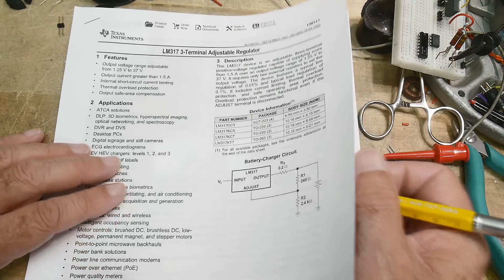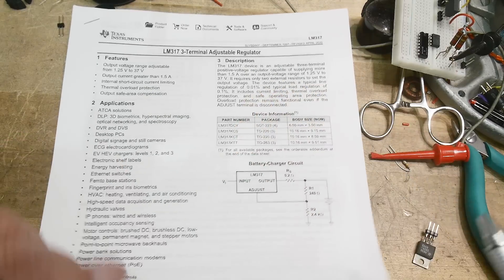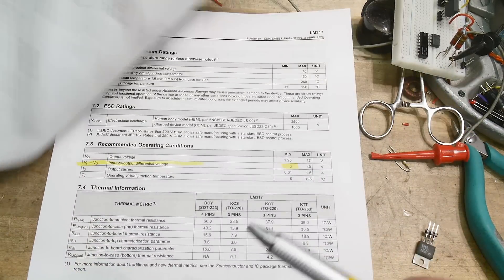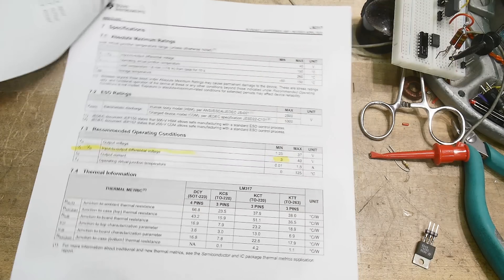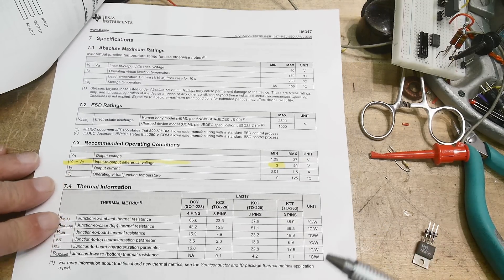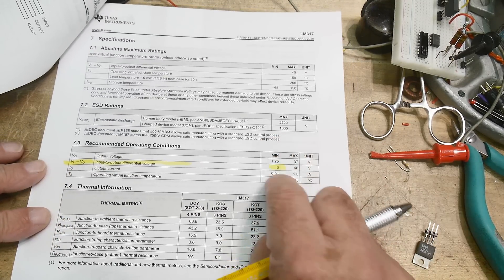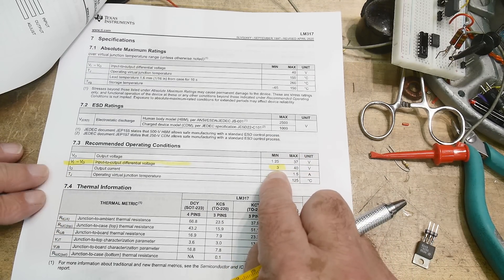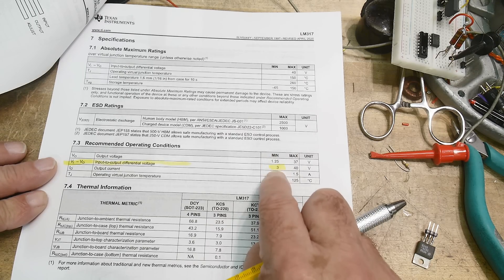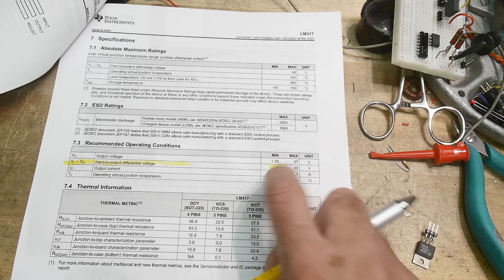So this particular part I think is an amp and a half, and over certain voltage and everything. What Texas Instrument will guarantee is that this part will operate correctly under all conditions if you have at least a three-volt input to output difference, and that's the dropout, a three-volt dropout.